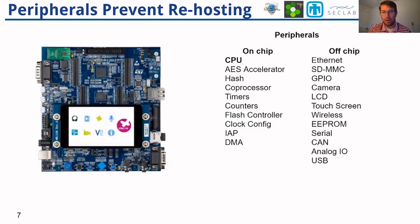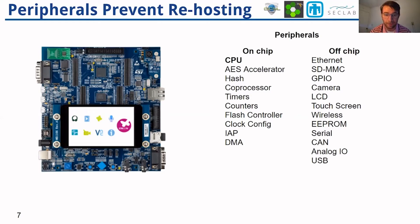Peripherals are the biggest problem to enabling scalable rehosting of firmware. We currently have QEMU, which is a CPU emulator that enables us to execute the instruction sets of CPUs and a handful of peripherals. However, if you look at a modern microcontroller like the one on the left, it has 20 to 30 different peripherals that it can access and interact with, and the firmware, being bare metal, directly accesses all these peripherals and will not operate without them. And that's just a single device.